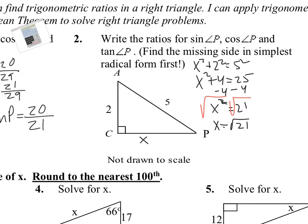So X is the square root of 21. We should ask ourselves: is there a perfect square that goes into 21? Perfect squares are like 4, 16, and 25. None of those are factors of 21, so this is the square root of 21 — we leave it alone like that.